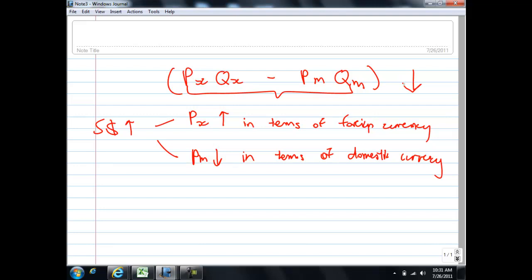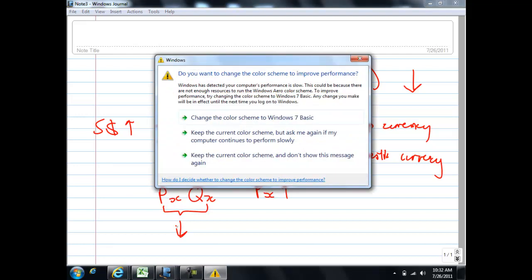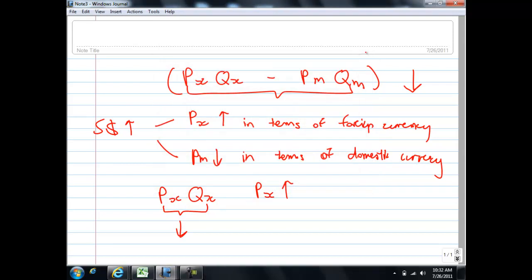Let's recall what we learned under elasticity. If PxQx, when Px rises, under what condition will this entire product fall? If you can recall what you learned in elasticity, if the demand for the exports is price elastic, a rise in the export price will lead to a more than proportionate fall in the quantity demanded for exports. So that will guarantee that the PxQx would fall.